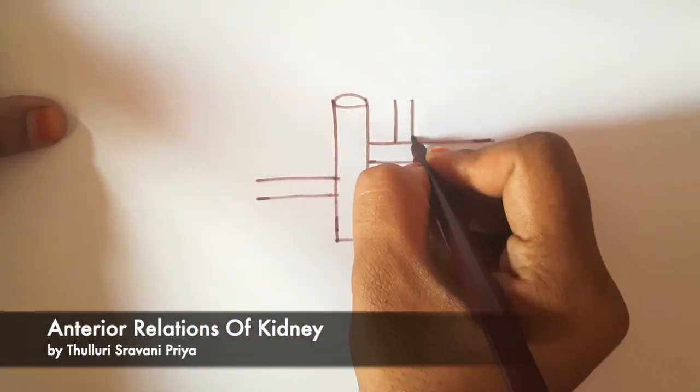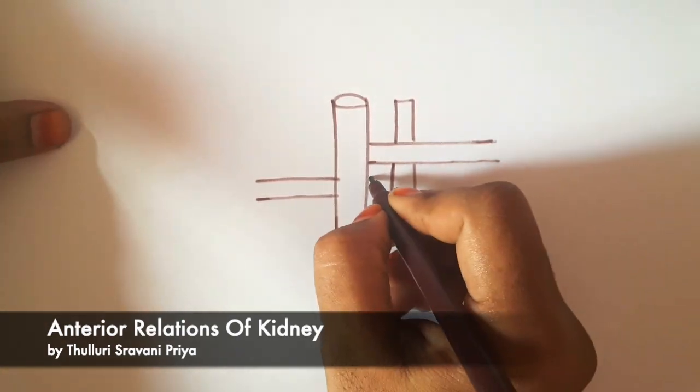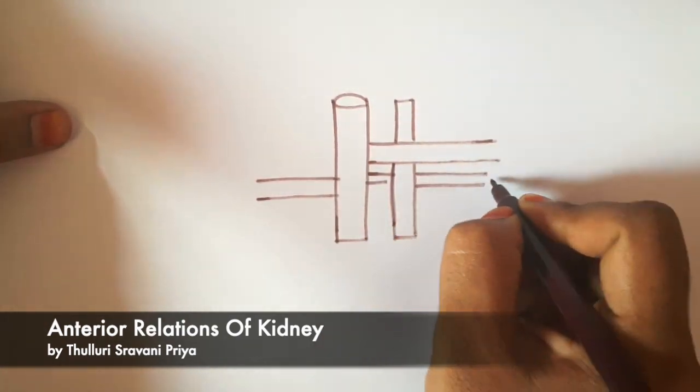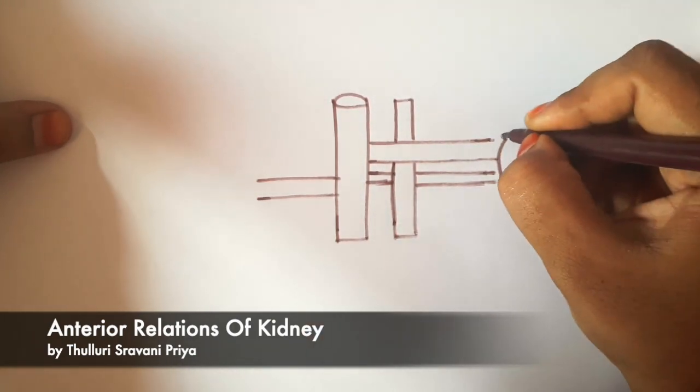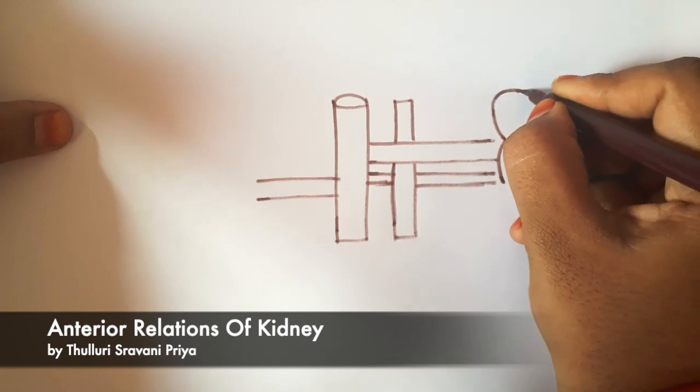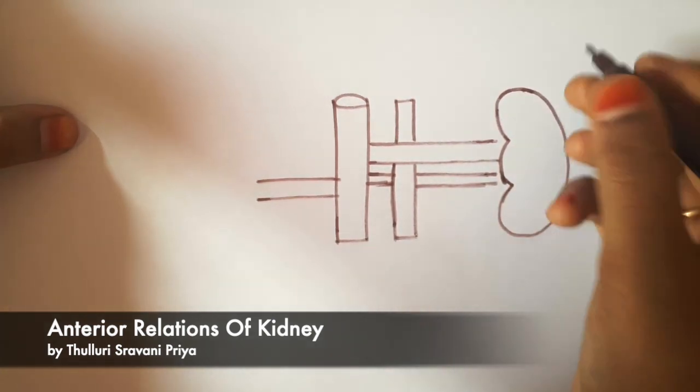This is the inferior vena cava with its both right and left renal veins, and this is the aorta with its renal arteries. Through the hilum, these vessels will enter into the kidneys.